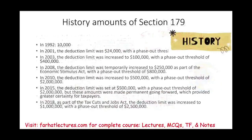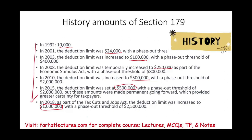Here's a brief history of Section 179: it started at $10,000; in 2001 it went to $24,000; then it was increased to $100,000, then $250,000; in 2010 it was $500,000. In 2015 it was made permanent — no longer a temporary deduction. In 2018, as part of the Tax Cuts and Jobs Act, it went up to $1 million. For 2022 it's $1,080,000, and it could be a different amount in future years.